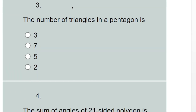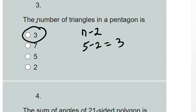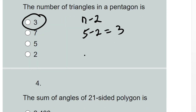For question three, we need the number of triangles in a pentagon. To get the number of triangles, we use n minus 2. A pentagon has five sides, so five minus two gives us three. The answer is three.